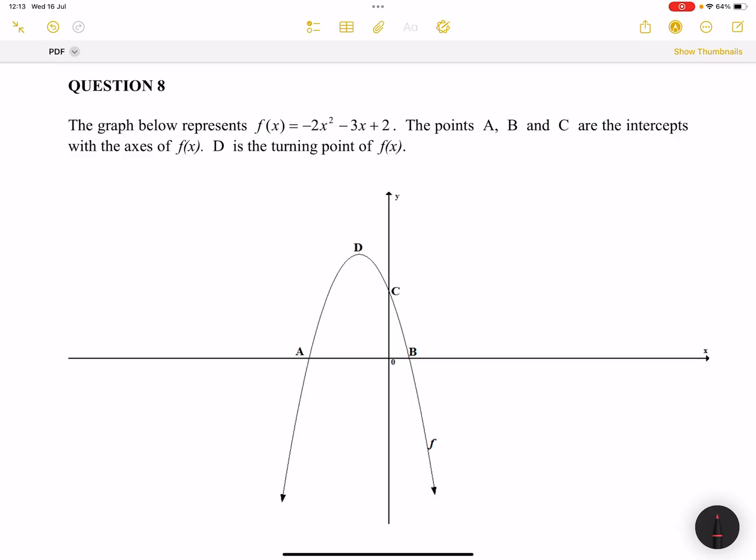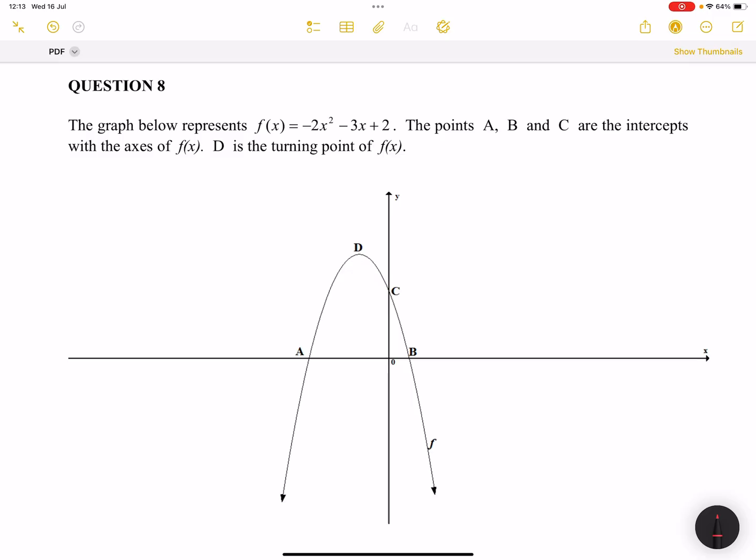So we've already answered questions 1 to 7, so you can go ahead and watch those. But in question 8 they say the graph below represents f(x), which is -2x² - 3x + 2. The points A, B, and C are the intercepts with the axes of f(x). D is the turning point of f(x). Now let's quickly have a look at this.